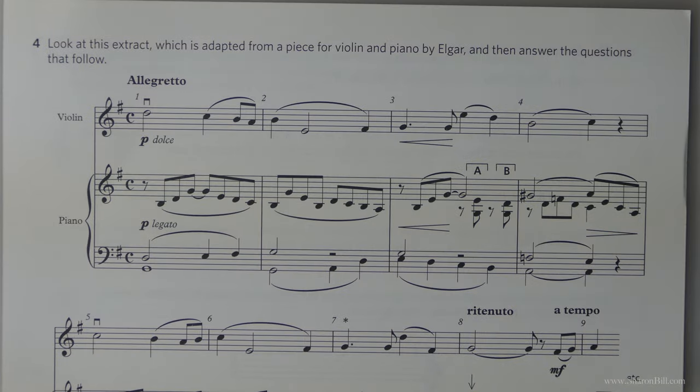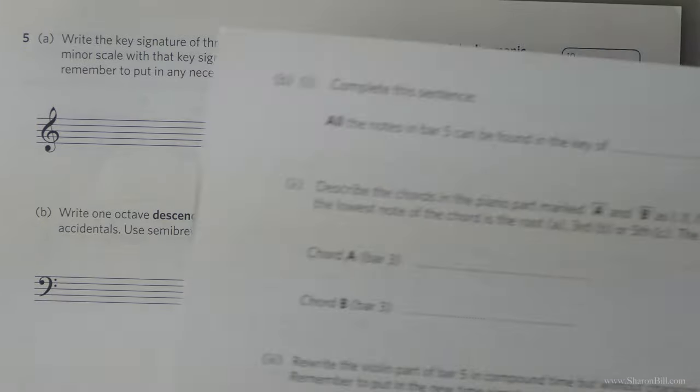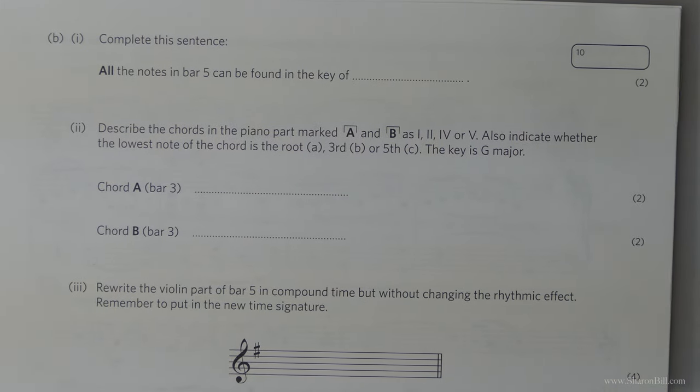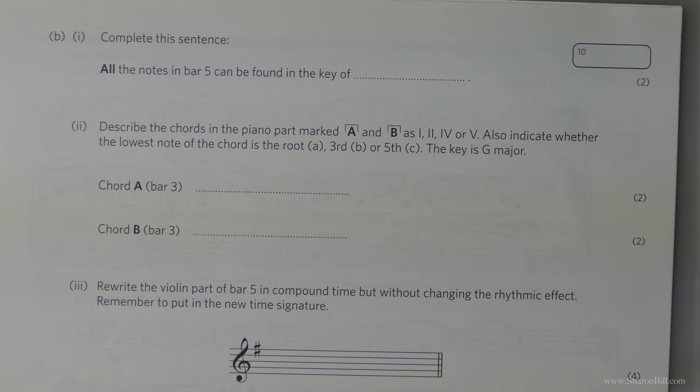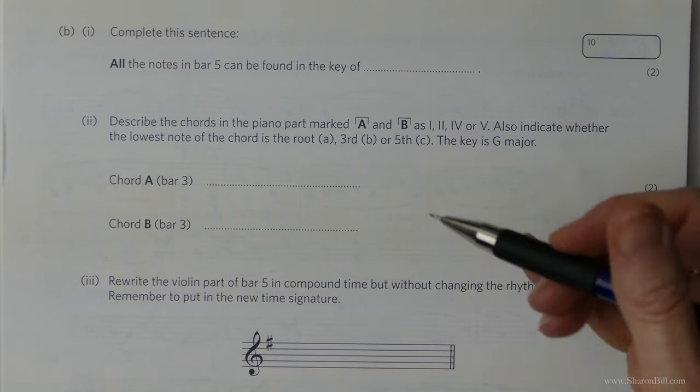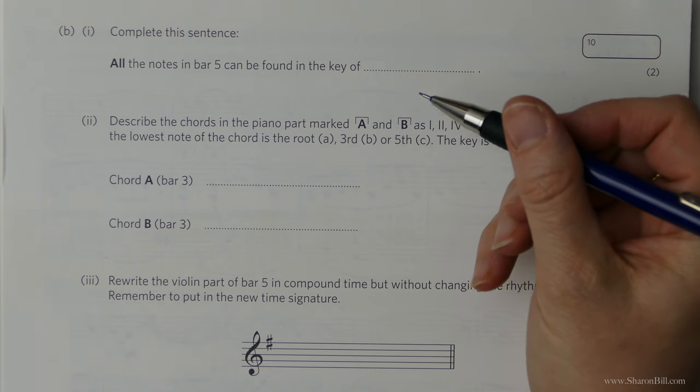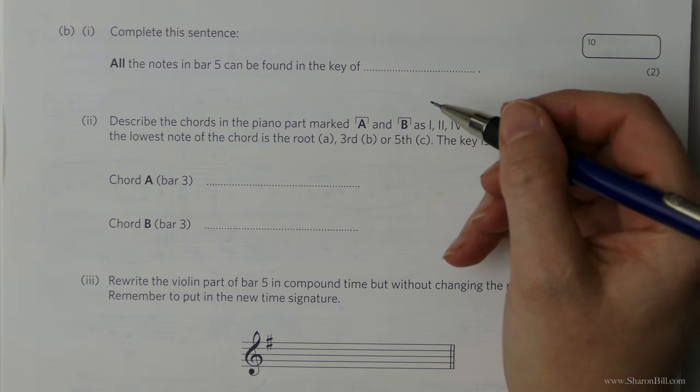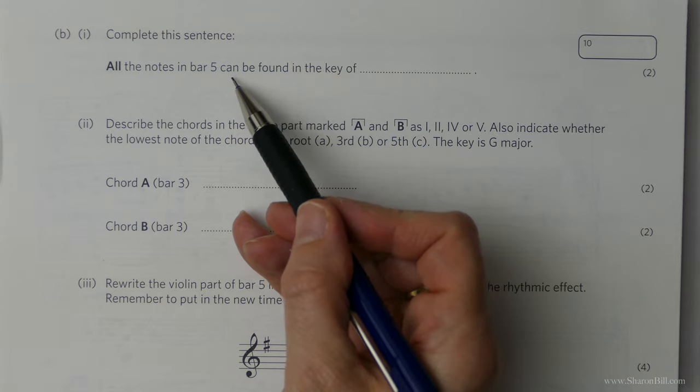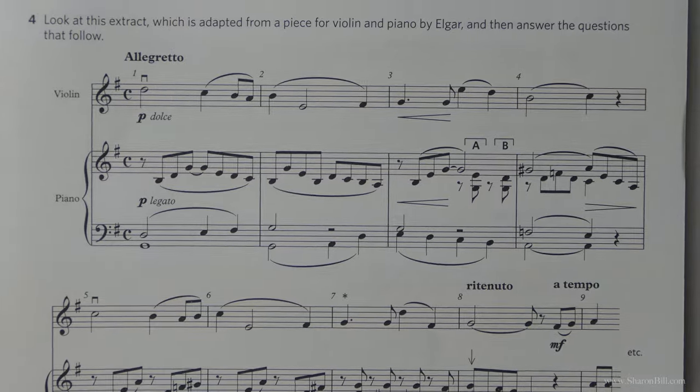Now we carry on over the page. It's a little bit awkward in this instance because we have to keep turning the page. This is because it's a sample paper, it's just a specimen paper. Nobody ever sat this exam. So the layout of the booklet isn't very helpful. So all the notes in bar five can be found in what key. So back over the page we go. Let's have a look at bar five.